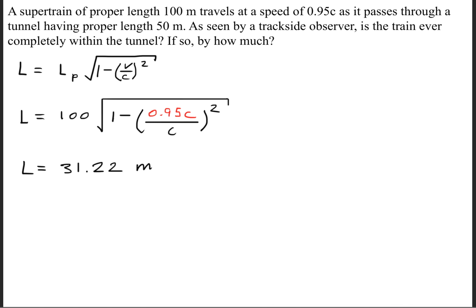So when we go ahead and solve, we'll get a contracted length of 31.22 meters. So this is the new length of the supertrain when it's going 0.95 times the speed of light.